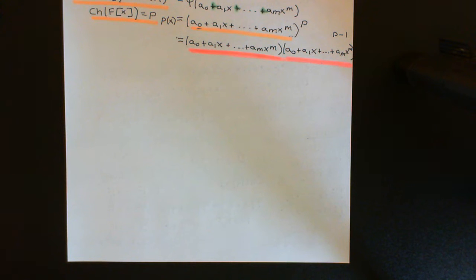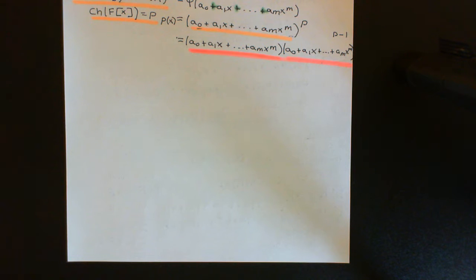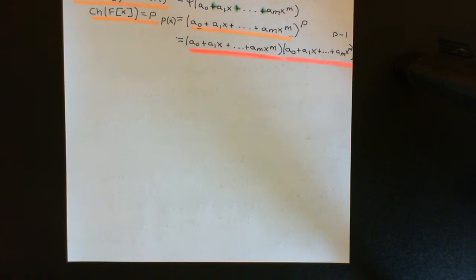Welcome back to this next video in which we are discussing separable polynomials over a finite field of characteristic P. We've now successfully proven Theorem 1: that if you have an irreducible polynomial in the ring of polynomials over a finite field of characteristic P, that polynomial is going to be separable.